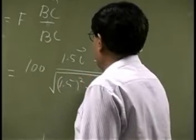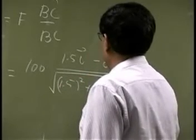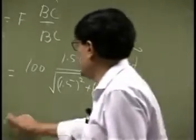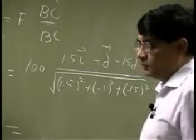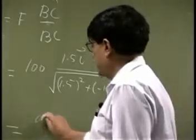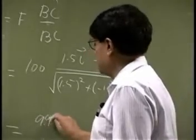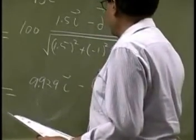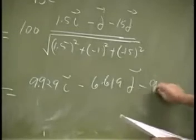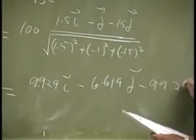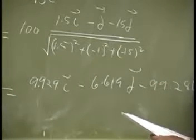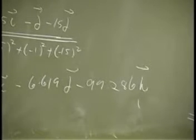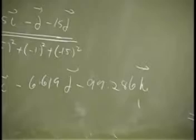1.5 square, negative 1 square, negative 15 square, and that should give us the actual force vector that is going to be 9.929i, negative 6.619j, negative 19.286k. So we have everything we need - we got those two position vectors, we got the actual force vector.